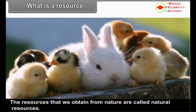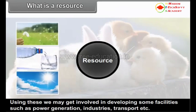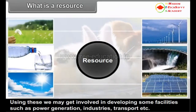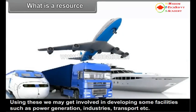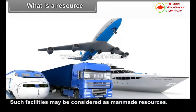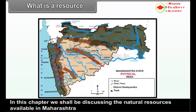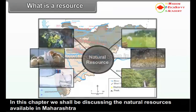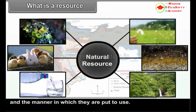The resources that we obtain from nature are called natural resources. Using these, we may get involved in developing facilities such as power generation, industries, transport, etc. Such facilities may be considered as man-made resources. The development of a region basically depends on the availability of resources and their proper and judicious utilization. In this chapter, we shall be discussing the natural resources available in Maharashtra and the manner in which they are put to use.